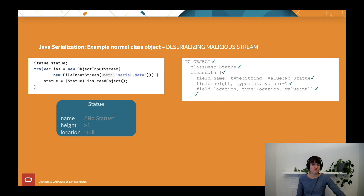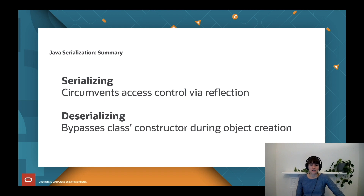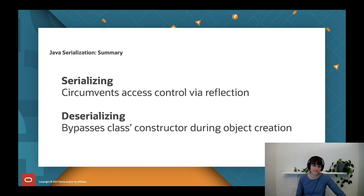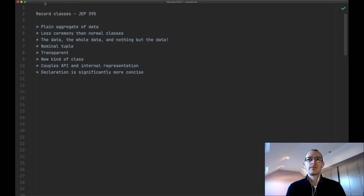To recap the problems of Java serialization: during serialization, the framework extracts the state of private fields by circumventing access control via reflection. During deserialization, the class constructor is never called — it's bypassed, and instead the superclass constructor is called. Those two aspects are what it means when I say Java serialization was not designed as part of the object model. Now let's move on to section two to see what records bring to the table. For this I hand over to Chris for what I call an in-IDE sales pitch.